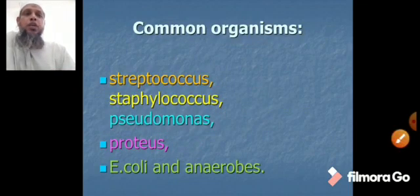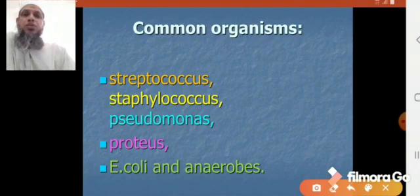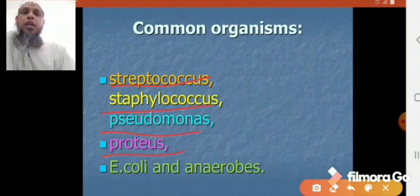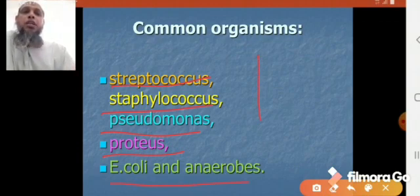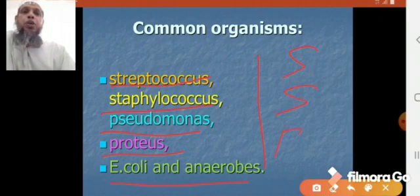The causative organisms are streptococcus, staphylococcus, pseudomonas, proteus, E. coli, and anaerobes. We can remember them by the mnemonic SS PPE: Streptococcus, Staphylococcus, Proteus, Pseudomonas, and E. coli and Anaerobes.